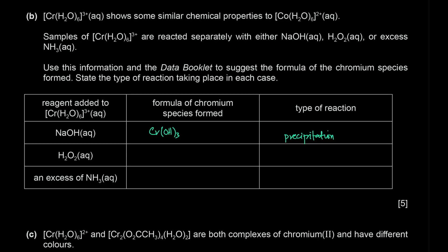With ammonia, in the cobalt complex all six water molecules were replaced by ammonia. The same applies for the chromium complex — all six water molecules are replaced by ammonia. Ammonia is a neutral ligand, so chromium still has a 3+ oxidation number. This is the formula of the chromium species, and this is a ligand exchange reaction.